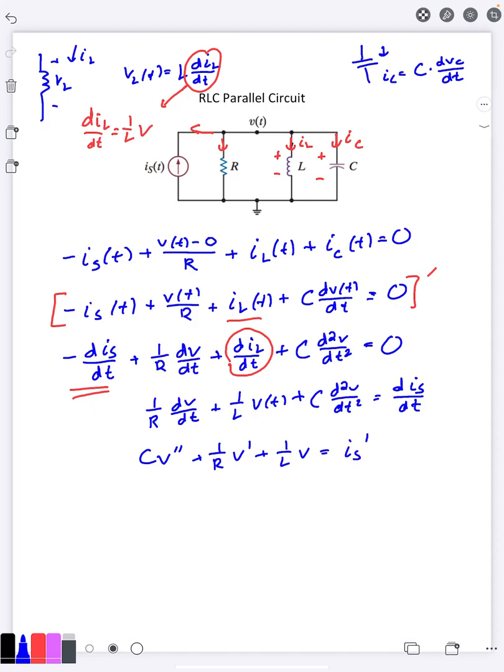And we usually like our leading coefficient to be one, so I'll divide by C here and get v double prime plus one over RC v prime plus one over LC v is one over C times is prime.